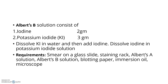Albert's B solution, also known as Albert's iodine, contains iodine and potassium iodide. Potassium iodide is dissolved in water, and then iodine is added to it. The staining requirements include a bacterial smear on a glass slide, a staining rack, Albert's A solution, Albert's B solution, blotting paper, immersion oil, and a microscope.